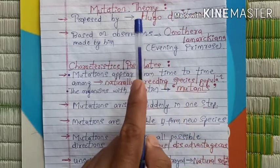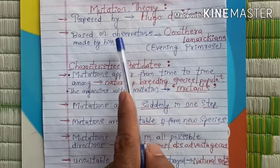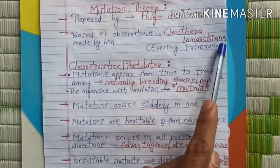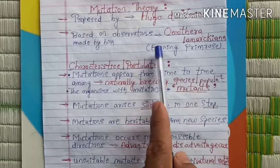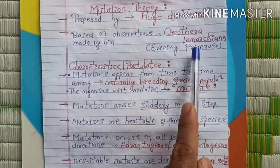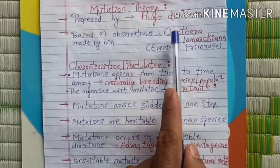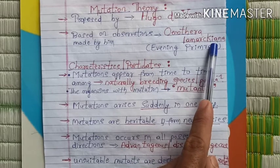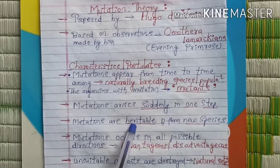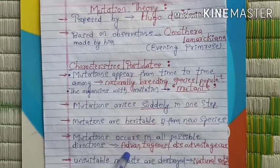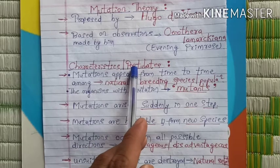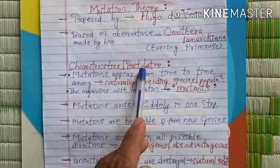This theory was proposed by Hugo de Vries based on his observations on the plant Oenothera lamarckiana, also called the evening primrose. The scientific name is Oenothera lamarckiana. Now I am going to explain the important characteristics of this theory. In exams, you can get questions on the characteristics or postulates of Mutation Theory — both refer to the same thing.